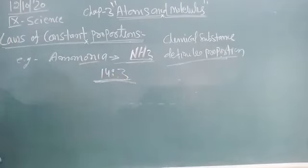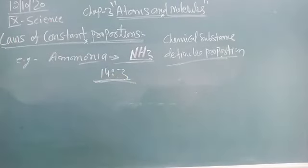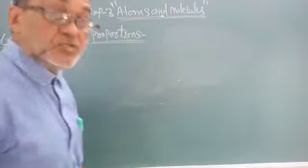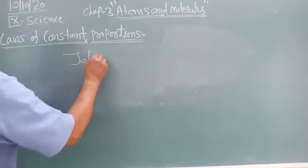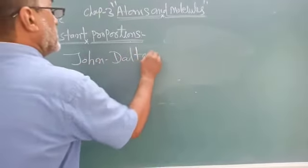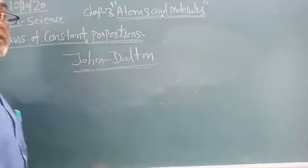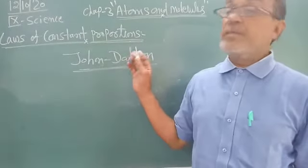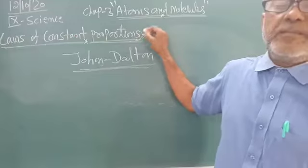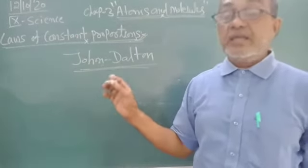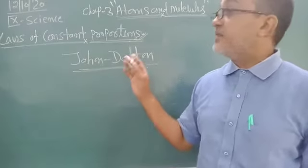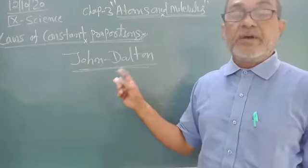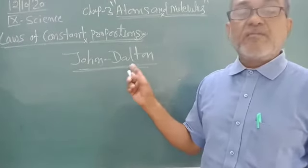The scientist John Dalton explained this law. The law of constant proportions means every compound has a constant or definite proportion by mass. For water, 1:8. For ammonia, 14:3.